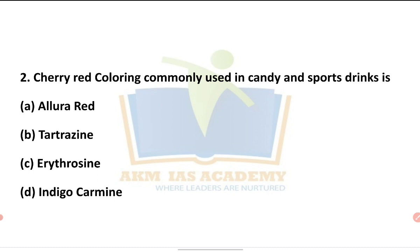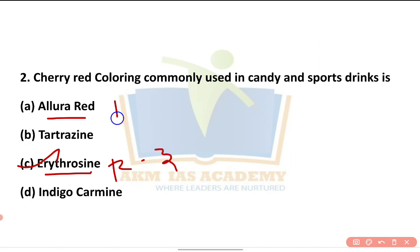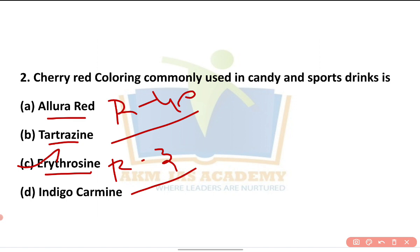Specifically, which one is the cherry red coloring compound used in candy and sports drinks? The answer is erythrosine, also called Red 3. Allura red is also called Red 40. Tartrazine is a lemon yellow azo dye giving lemon color. Indigo carmine is used for diagnostic purposes. So the option for this question is erythrosine.